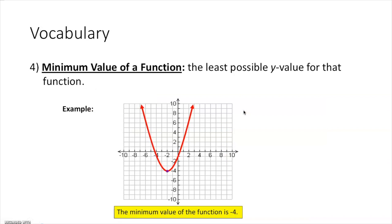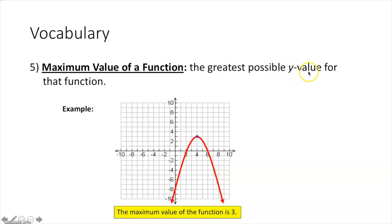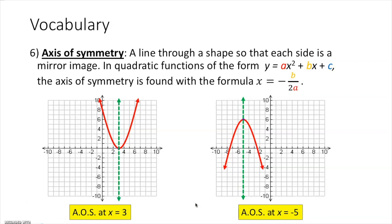The minimum value of a function is the least possible y value. Anytime you have a parabola opening upward, you have a minimum — not a maximum, because it goes up forever. The minimum value is the y value of your vertex. If the vertex is at negative 2 comma negative 4, then negative 4 is the minimum. The maximum value is the greatest possible y value — for a downward-opening parabola, it's the y value of the vertex. If the vertex is at 4 comma 3, then 3 is the maximum.